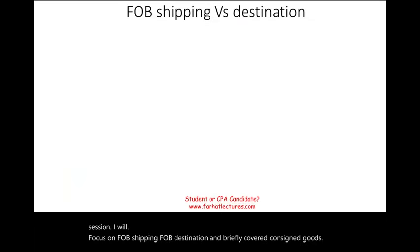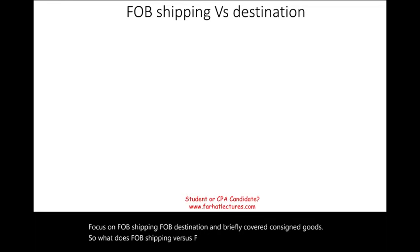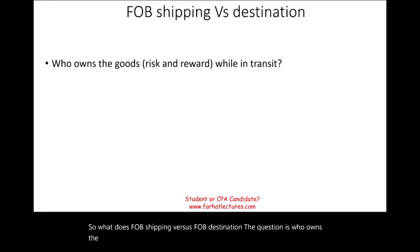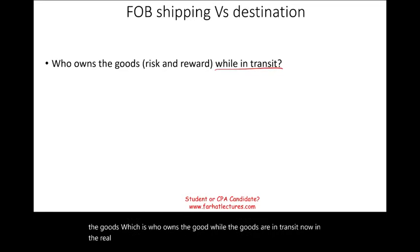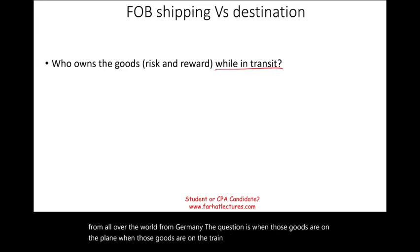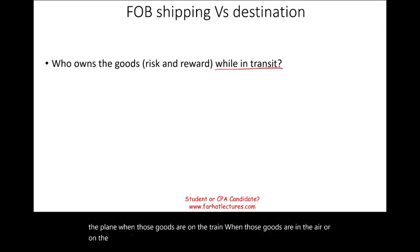So what is FOB shipping versus FOB destination? The question is: who owns the goods while they are in transit? In the real world, we could be talking about goods being shipped from China, from India, from Germany, from all over the world. When those goods are on the plane, on the train, in the air or on the boat — whose goods are they?